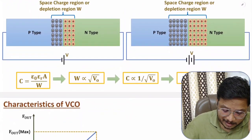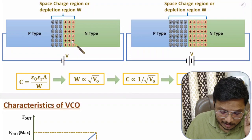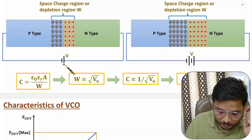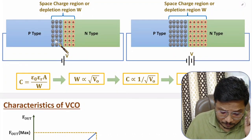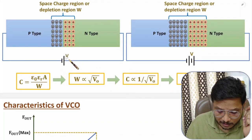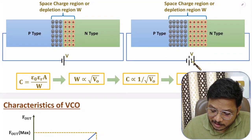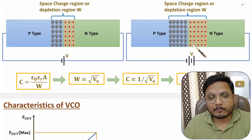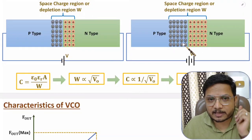A varactor diode is a PN junction diode. We connect it in reverse bias — the P-type is connected to the negative terminal of the battery and the N-type to the positive terminal. If you increase the reverse bias voltage, the width of the depletion region increases. The capacitance of the varactor diode is based on this reverse bias voltage.